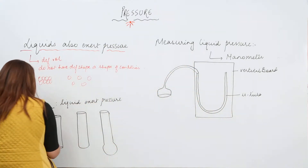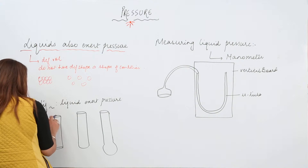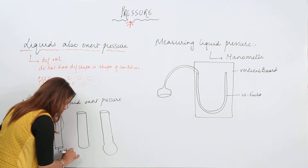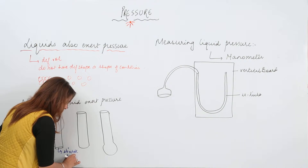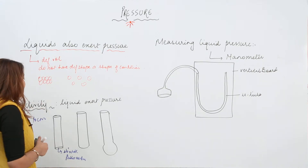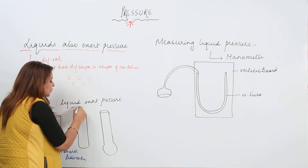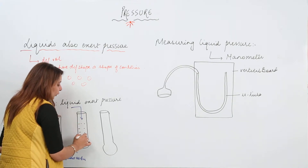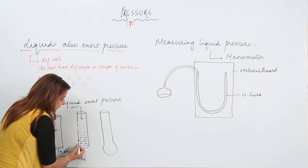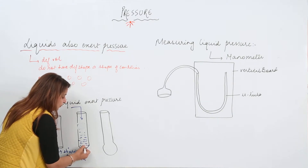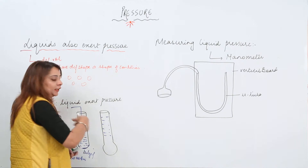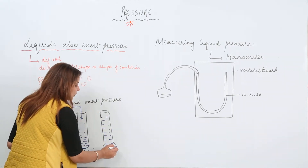I have a U-shaped glass tube which is approximately 8 to 10 cm. On the lower side, I have fixed a stretchable rubber membrane. Now what I do is I hold it in my hand and start adding water into it. We'll see that when we pour water into it, the rubber membrane starts bulging. And when we pour more water — when we increase the amount of water — we see that the bulging definitely increases.